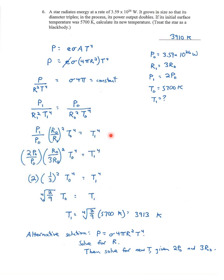Solving for T1, we get (P1/P0) × (R0/R1)² × T0⁴ = T1⁴. Now we're going to start making substitutions. This is some of the first stuff I write down when I start the problem. The initial power is 3.59 times 10 to the 26 watts. For R1, we don't really care what the radius is, but the important thing is the radius triples.